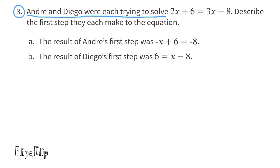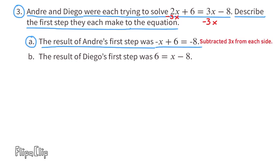Number 3. Andre and Diego were each trying to solve 2x plus 6 equals 3x minus 8. Describe the first step they each made to the equation. Well, it looks to me like Andre subtracted 3x from both sides of the equals sign. 2x minus 3x equals negative 1x or negative x. So Andre subtracted 3x from each side. That's the same thing as adding a negative 3x to each side.